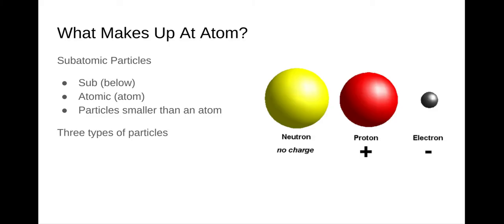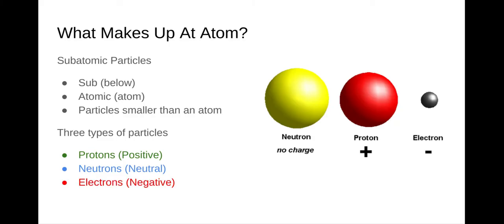There are three types of particles. We have protons, which are positive. We have neutrons, which are neutral — they have no charge to them. And we have electrons, which are negative.